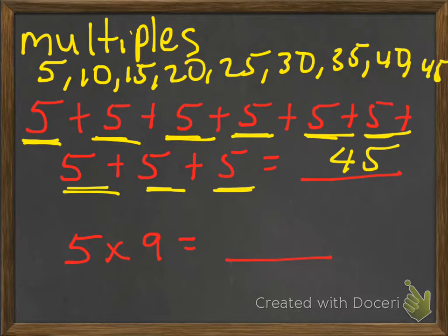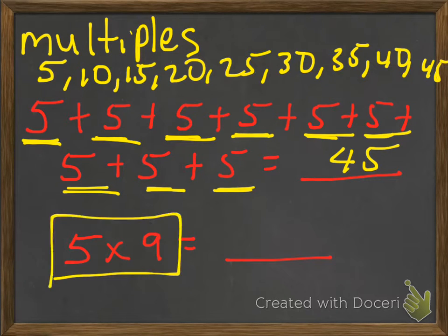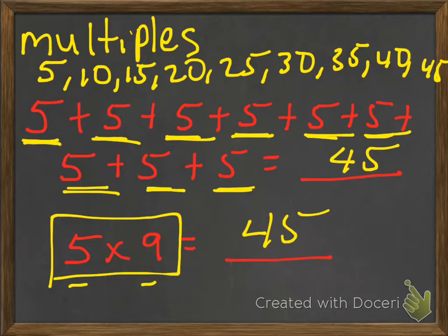Those are called multiples. We go back to five times nine — five and nine are our factors, and we get forty-five. That's our product.